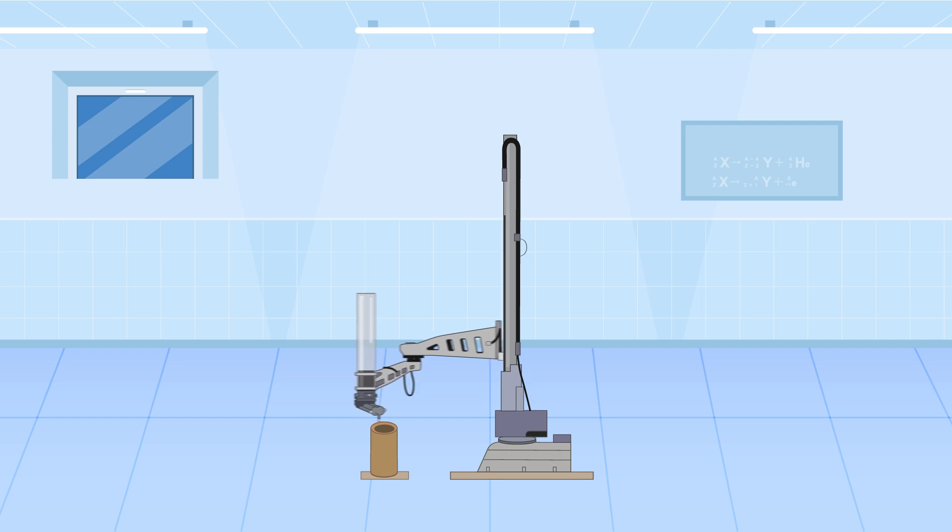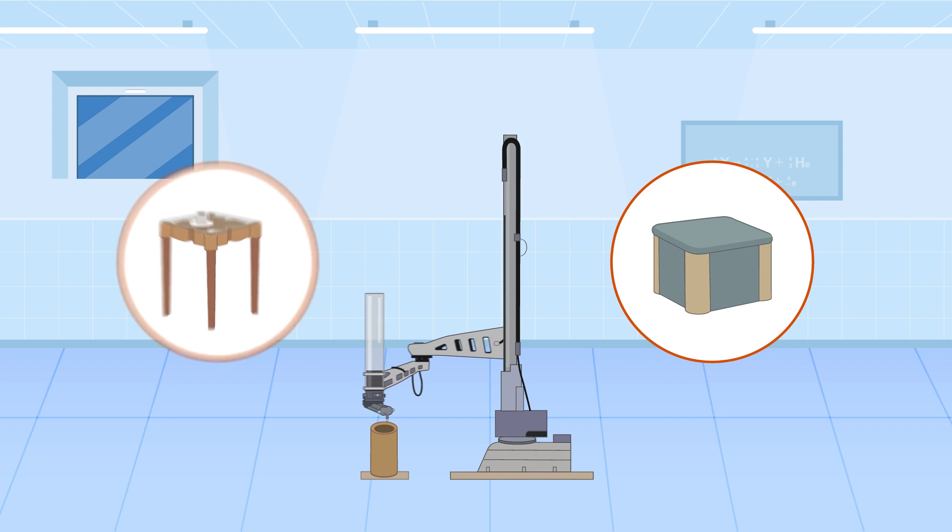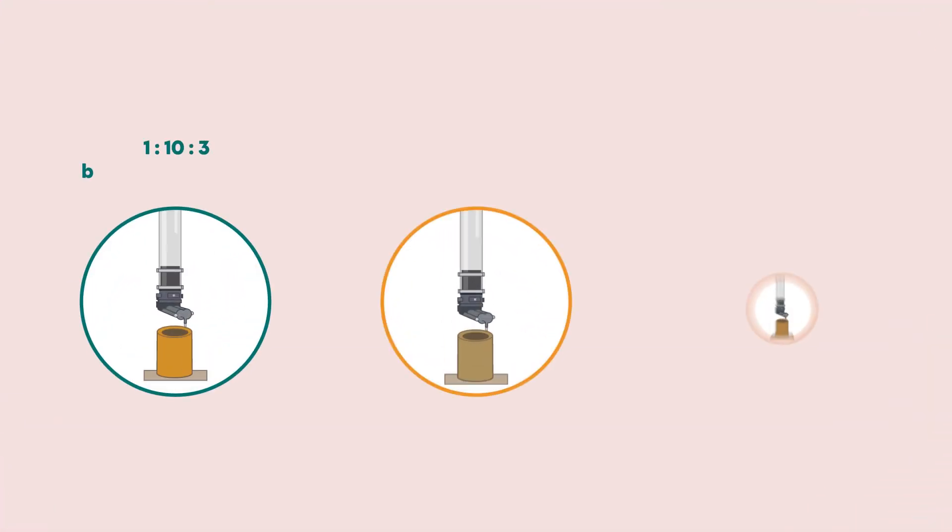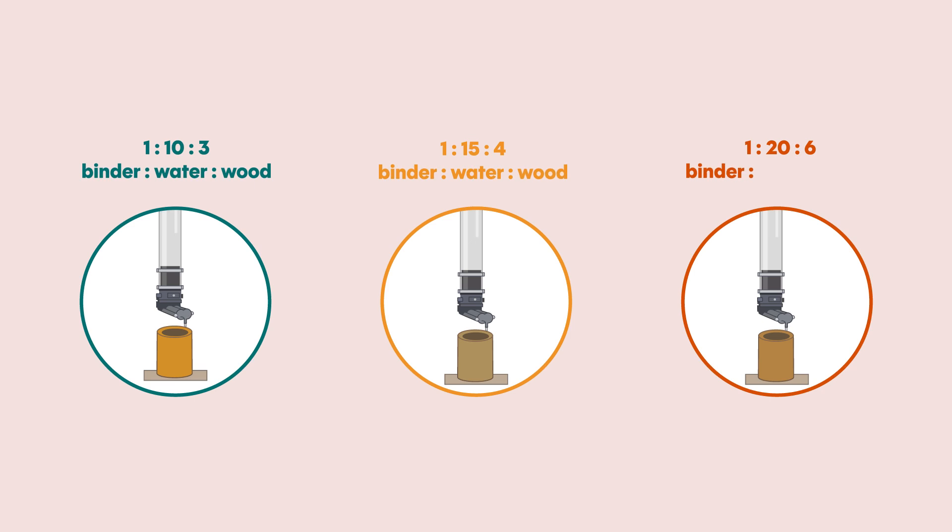Using a specially designed 3D printer, the researchers then sculpted their material into a variety of structures, including parts for a stool and a small coffee table. They repeated the process several times using varying proportions of wood in the mixture before testing the final products.